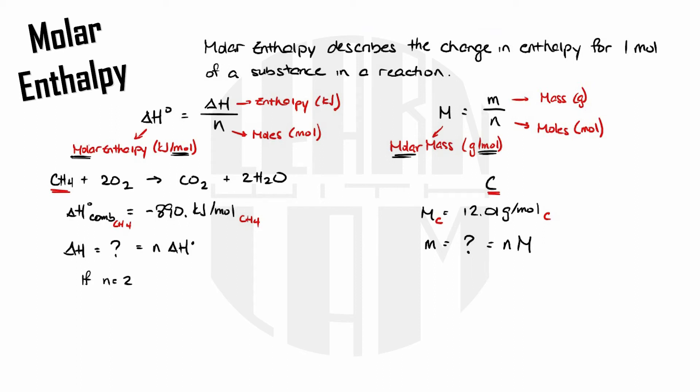So if I have 2.00 moles of methane then enthalpy equals moles which is 2.00 moles times molar enthalpy which is negative 890 kilojoules per mole. Cancel out the units and that gives me negative 1.98 times 10 to the power of 3 kilojoules. So I'm releasing twice as much energy as I would per one mole which makes sense because I'm burning double that which is 2 moles.